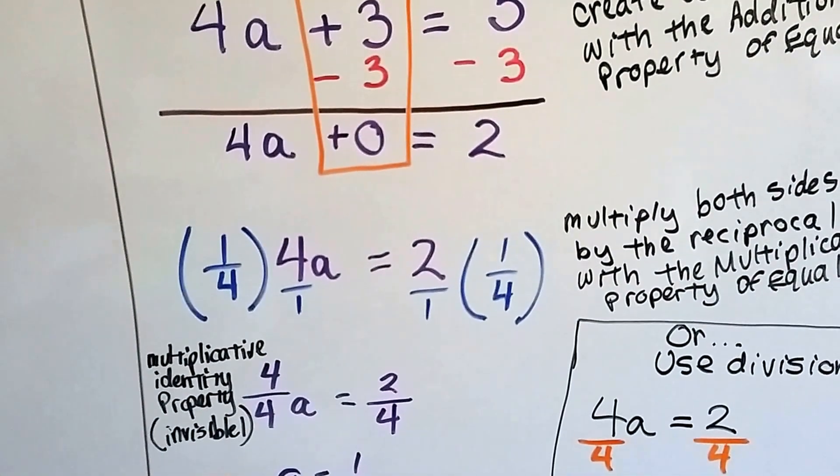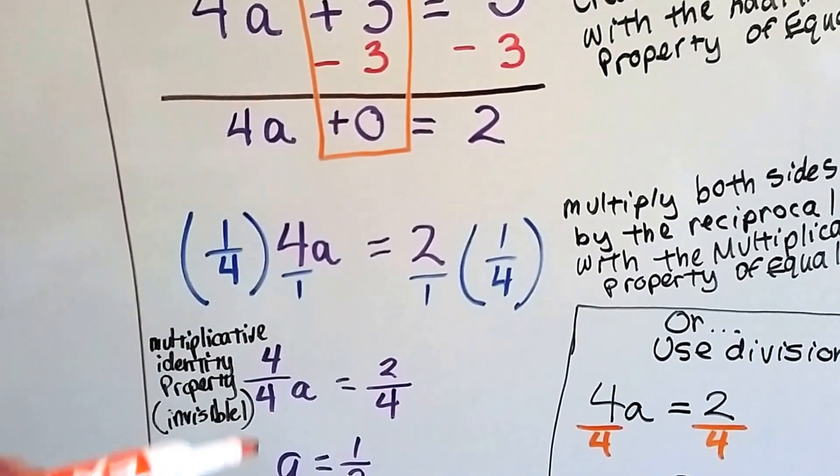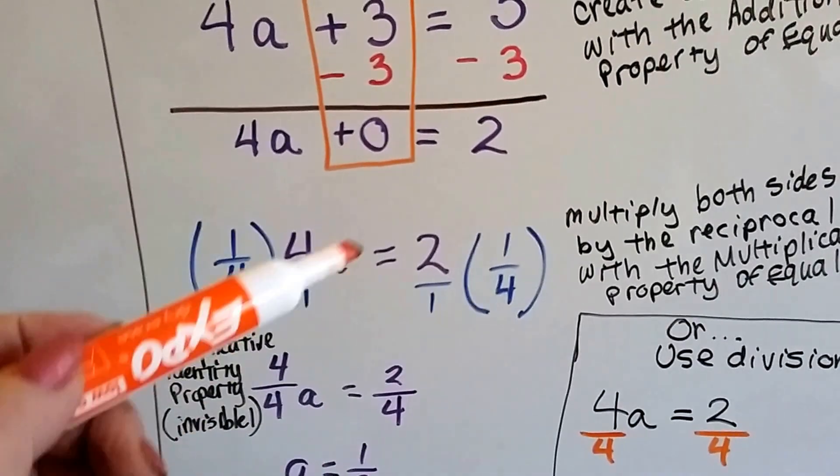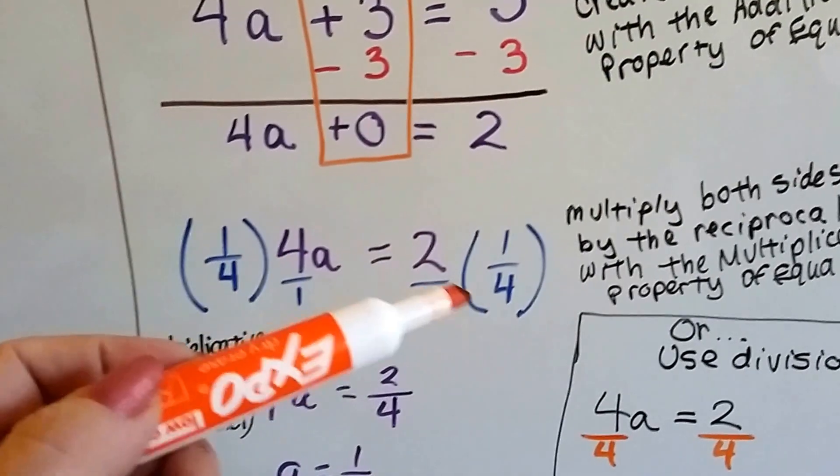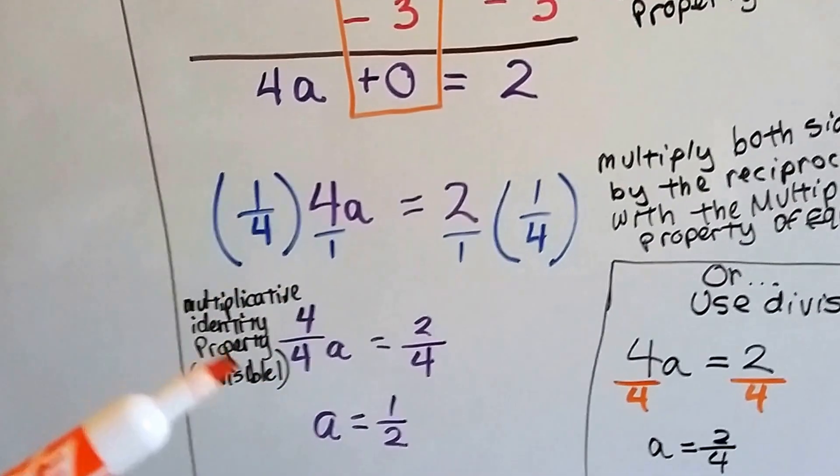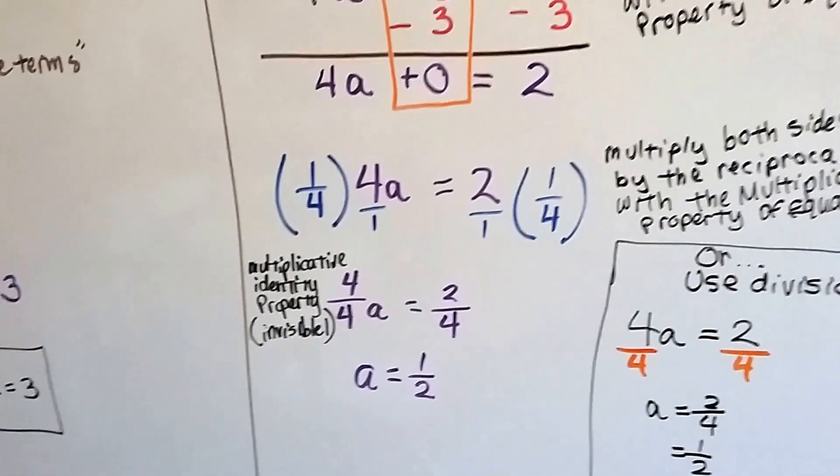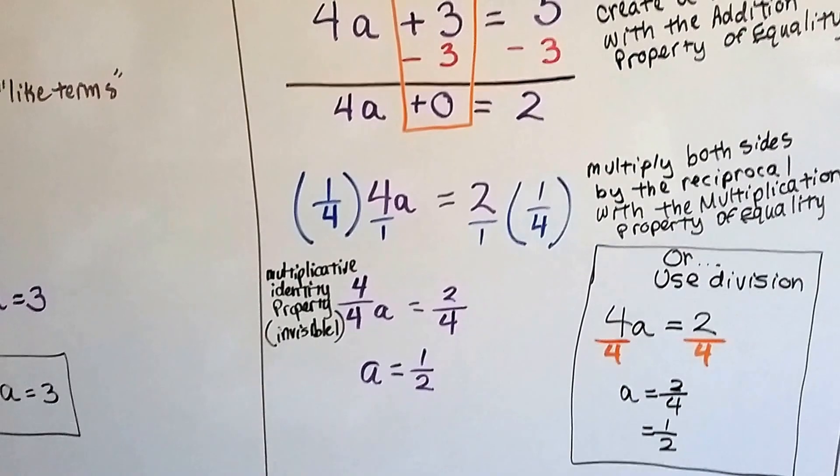That's the multiplicative identity property, our friend, the invisible 1, that doesn't need to be written, because the numerator and denominator is the same. On this side, we get 2 times 1 over 1 times 4. That's two-fourths. And when we simplify it, we get a half. So now we know our answer for a, a's value is a half.